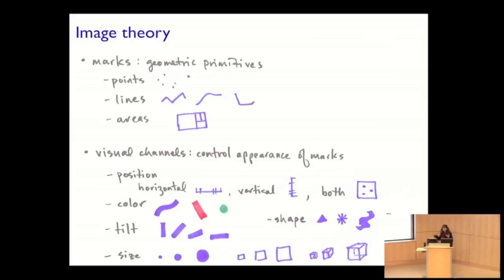So let's talk about what those are. So in what's called image theory, which grew out of the work of French semantician Bertin in the 60s, and it's been continually refined since then, there's this idea that there's a mark you could make, a geometric primitive. So the zero-dimensional case is a point, the one-dimensional case is a line, the two-dimensional case is an area. So given these geometric primitives, what can we do to them to control their appearance? That's what we're going to call visual channels.